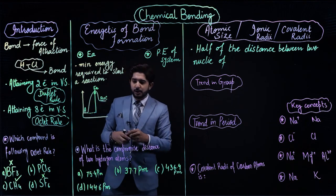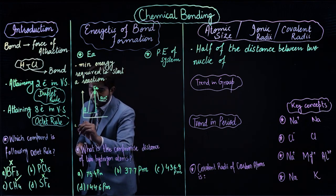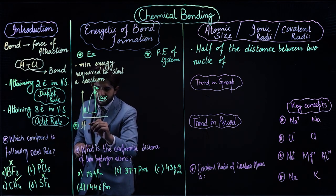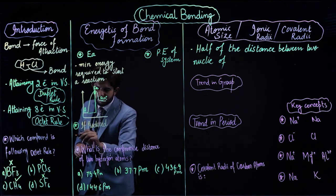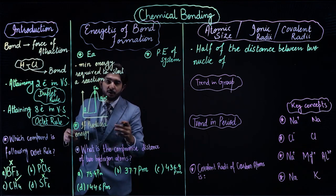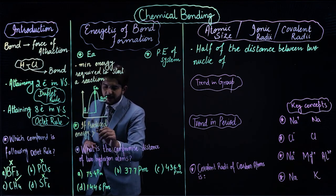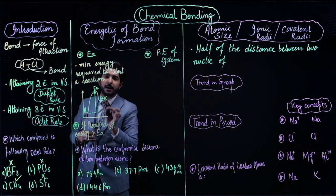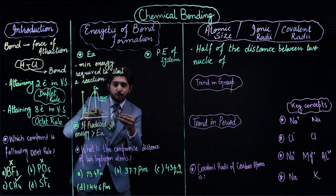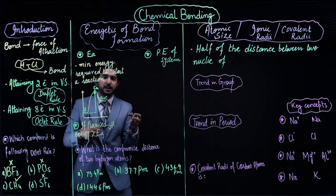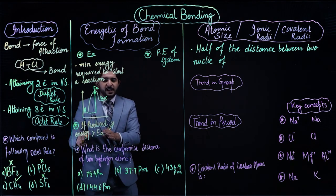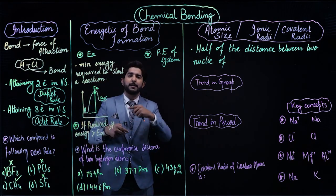To conclude: if produced energy from collision is greater than activation energy, then reaction can start. As soon as the reaction starts, energy decreases — because bond formation releases energy. When a bond breaks, energy is absorbed. So if produced energy is greater than activation energy, new bonds form.